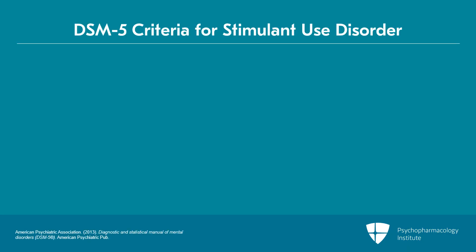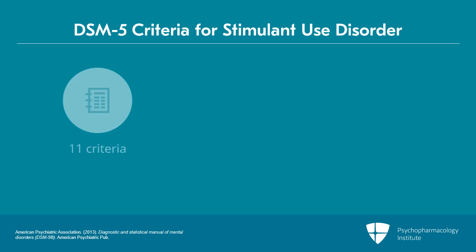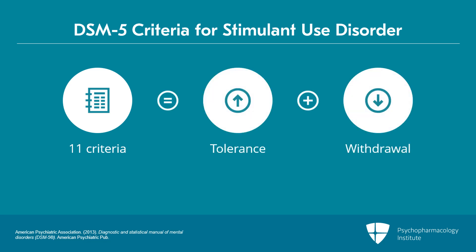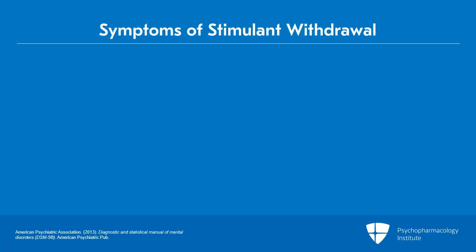We want to make a diagnosis of stimulant use disorder using the DSM-5 criteria. The DSM-5 criteria consist of 11 criteria. The first two are the existence of tolerance or the presence of withdrawal. We haven't talked much about stimulant withdrawal, but what typically happens is that because stimulants are so activating,